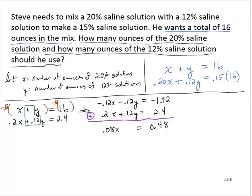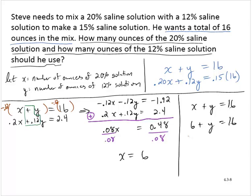I'll divide through by 0.08, and that yields x equals 6. Now since x plus y is 16, then 6 plus y is 16, and subtracting 6 from both sides, we find that y equals 10.